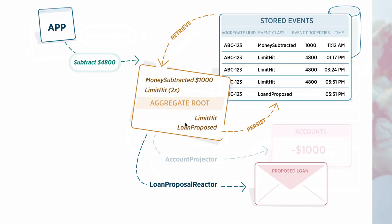When the aggregate root is persisted, all newly recorded events get sent to all event handlers. Our AccountProjector doesn't need to do anything because it doesn't listen for those events, but we have a reactor that listens for the LoanProposed event and actually sends the loan proposal email. That's how an aggregate root implements business rules.